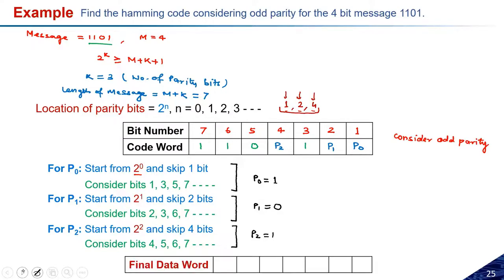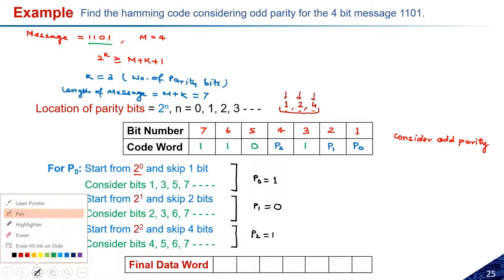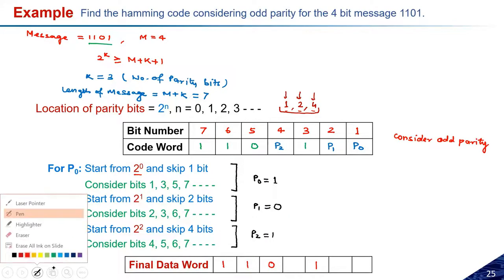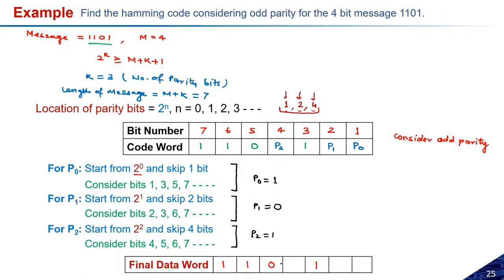Now we have p0 = 1, p1 = 0, and p2 = 1. The final code word places these at positions 1, 2, and 4 respectively. The actual code word to be transmitted is: bit 1 = p0 = 1, bit 2 = p1 = 0, bit 3 = m0 = 1, bit 4 = p2 = 1, bit 5 = m1 = 1, bit 6 = m2 = 0, bit 7 = m3 = 1. This is the code word that will be transmitted.